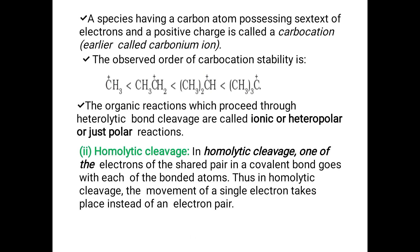A species having a carbon atom possessing a sextet of electrons and a positive charge is called a carbocation — the atom which donates electrons carries a positive charge. The observed order of carbocation stability: as the number of methyl groups increases, stability also increases. The organic reactions which proceed through heterolytic bond cleavage are called ionic, heteropolar, or polar reactions.